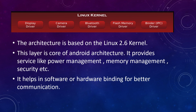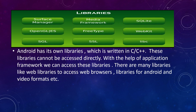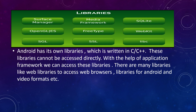The libraries layer contains Surface Manager, Media Framework, SQLite, OpenGL, FreeType, WebKit, SGL, SSL, and libc, among others. These libraries are written in C or C++ and cannot be accessed directly — they are accessed through the application framework. There are web libraries for browser access, libraries for audio and video formats, and SQLite, which is used to store data in a database.